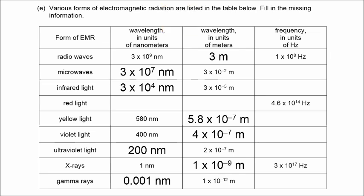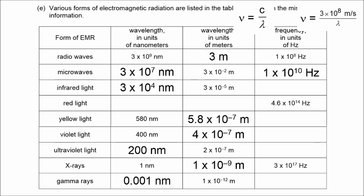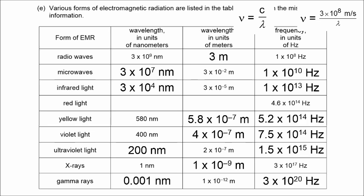For the conversion from wavelength in meters to frequency, we're going to take the speed of light and divide by the wavelength in meters. For microwaves, the frequency becomes 1 times 10 to the 10th hertz. For infrared light, 1 times 10 to the 13th hertz. And then yellow light, violet light, ultraviolet light, and gamma rays — we're just doing that same math: speed of light divided by the wavelength in meters.